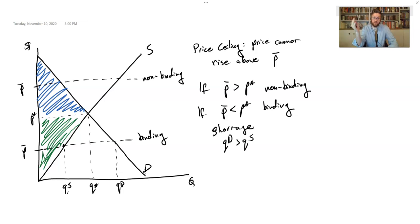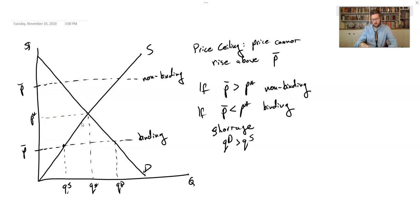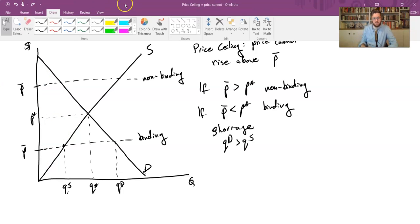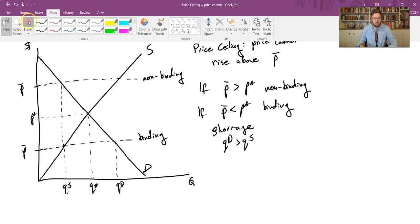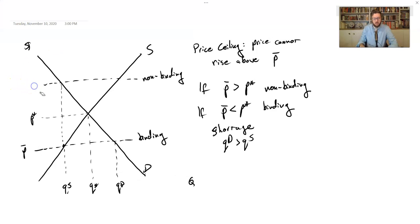If we then impose this price ceiling, it's going to be worse for the firms and better for some of the consumers, but worse for others and overall a net negative. Why is that the case? The quantity is now going to be given by the quantity supplied. The quantity demanded is out there, but it doesn't actually matter.